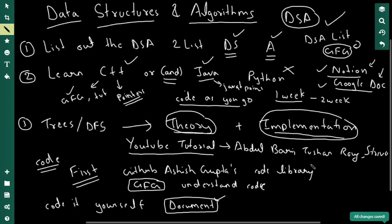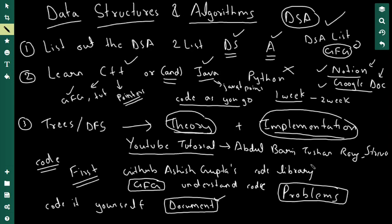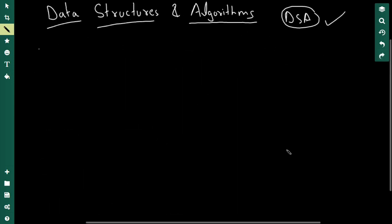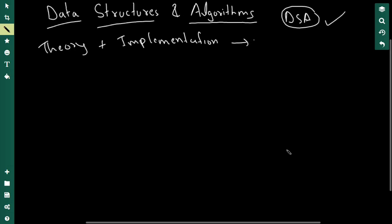So far, what you've done is learned the programming language, have the list of DSA, and for each item you've learned the theory, looked at someone else's implementation, and then coded it yourself. Now the most important part is solving problems — this is the step that tests your understanding of DSA.